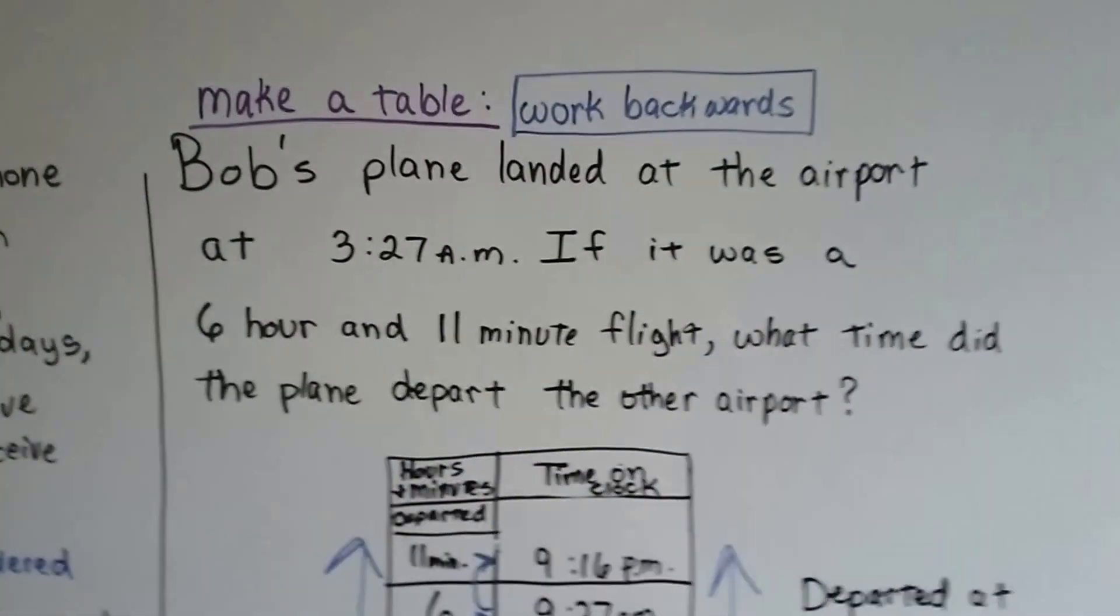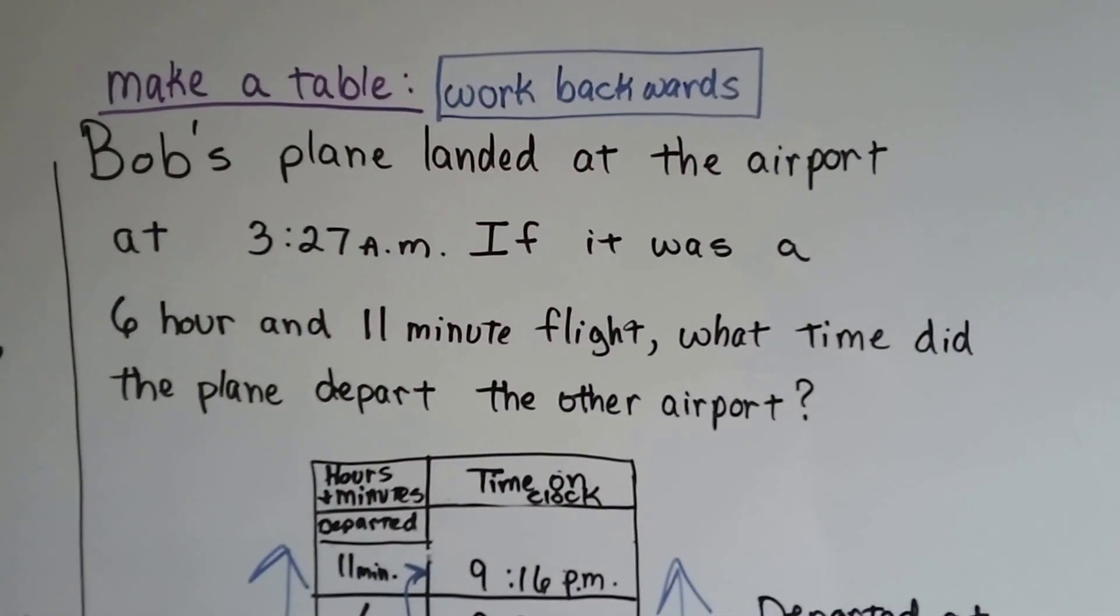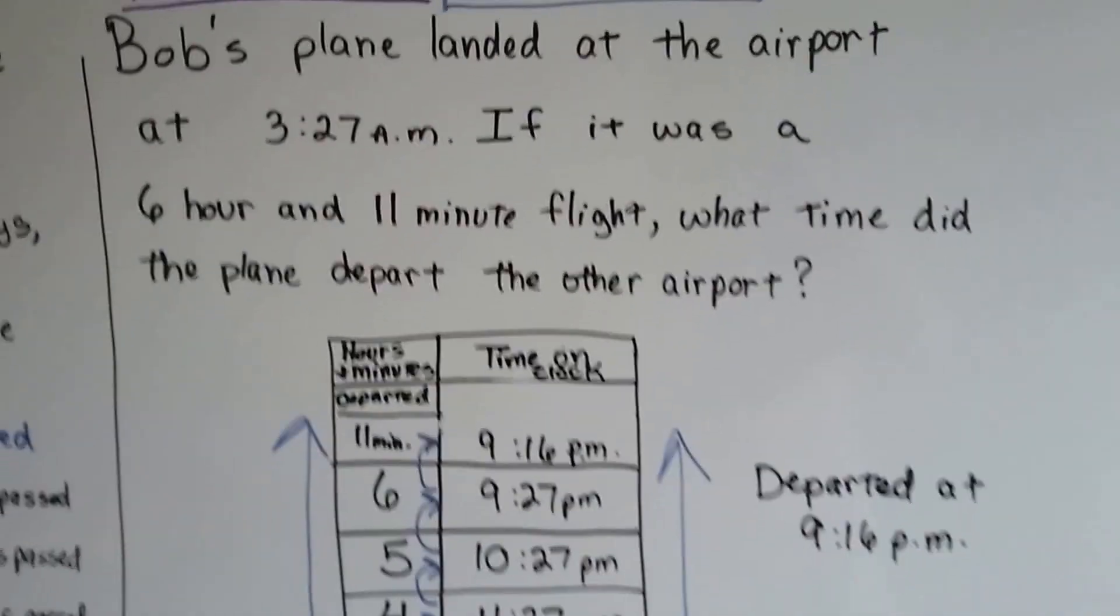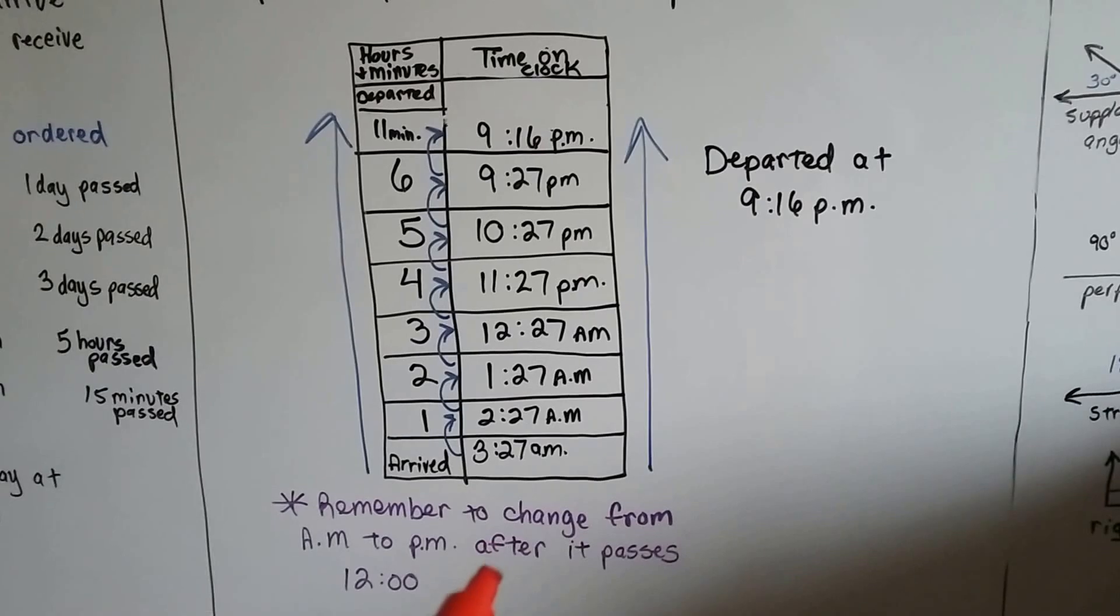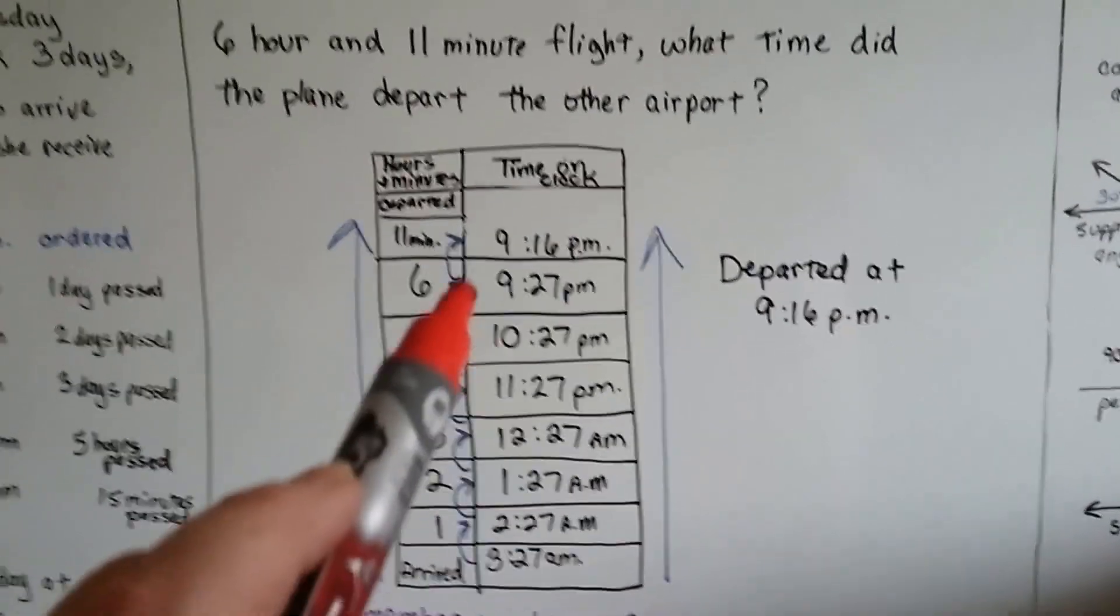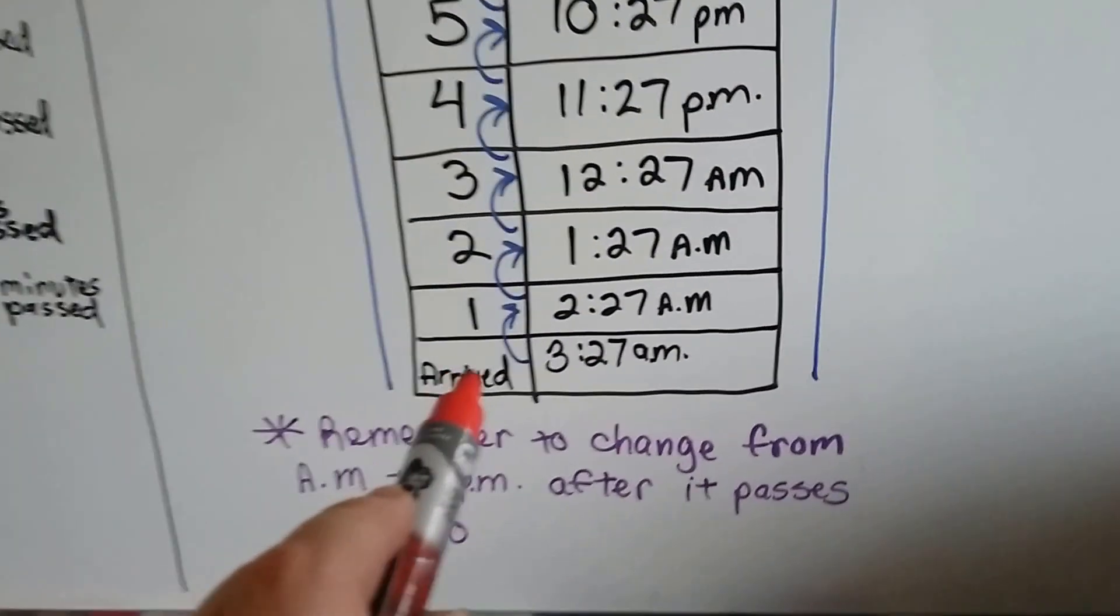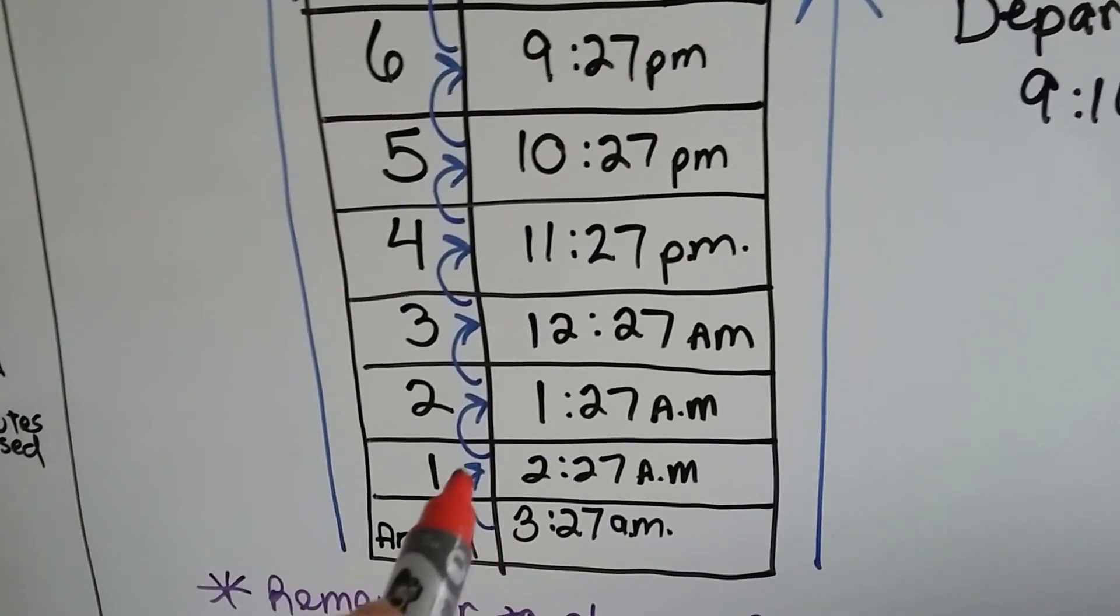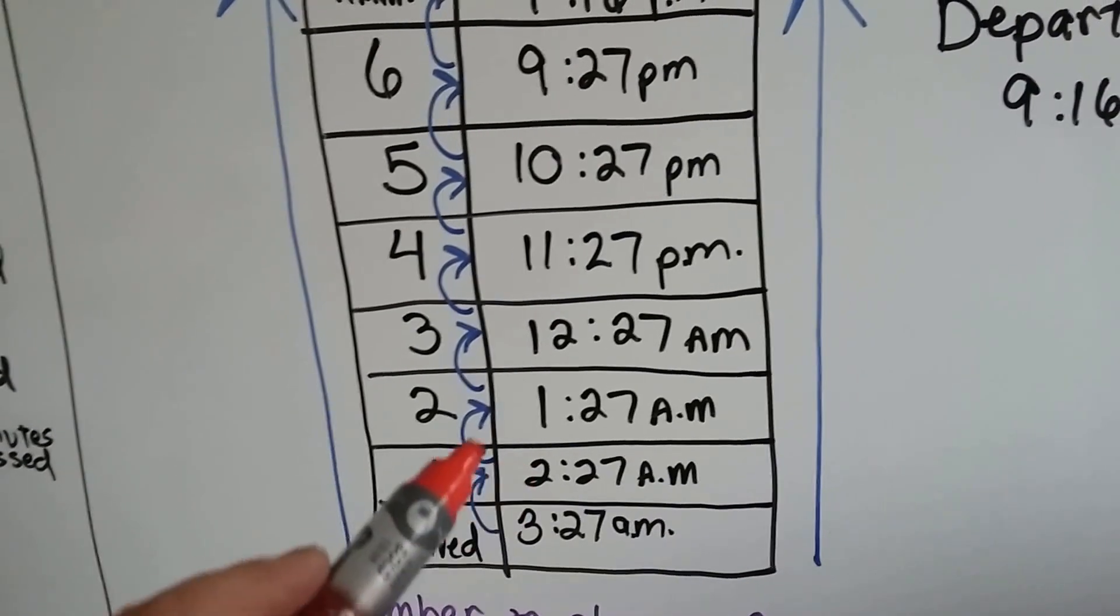Here we have to work backwards. Bob's plane landed at the airport at 3:27 a.m. If it was a six hour and 11 minute flight, what time did the plane depart the other airport? So what I did was I made the table, but I started at the bottom. And you have to remember to change from a.m. to p.m. when it passes 12. So we know that it landed at 3:27 a.m., so that's when I put it arrived. So it was a six hour and 11 minute flight. I went back one hour. This is one hour has gone by, so now it's 2:27 a.m. Two hours is 1:27. Three hours is 12:27.